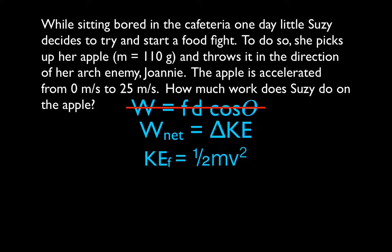So the kinetic energy, now all we really need to do here is calculate the final kinetic energy, because we know the initial kinetic energy is zero. So that means, because the velocity of the apple is initially at zero, and then it's accelerated to 25 meters per second.